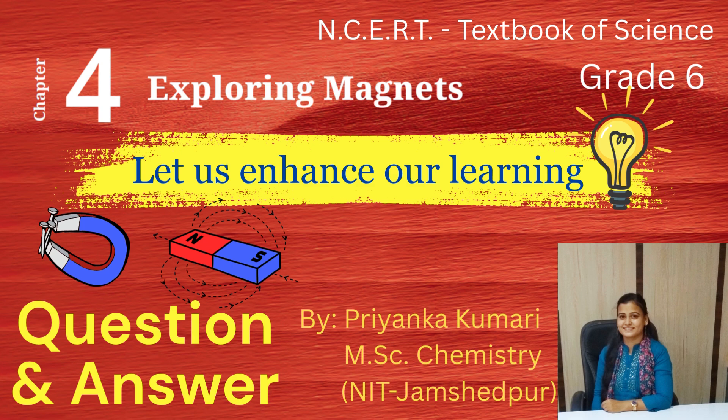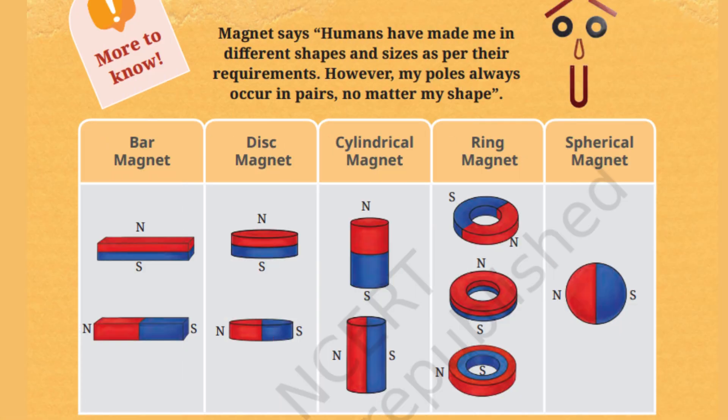Before we jump into the question and answer, let's quickly understand something super cool — the different shapes of magnets. Did you know the magnet says: humans have made me in different shapes and sizes based on their needs, but my poles always come in pairs, no matter what shape I take. There are many shapes of magnets and each one is used for different purposes.